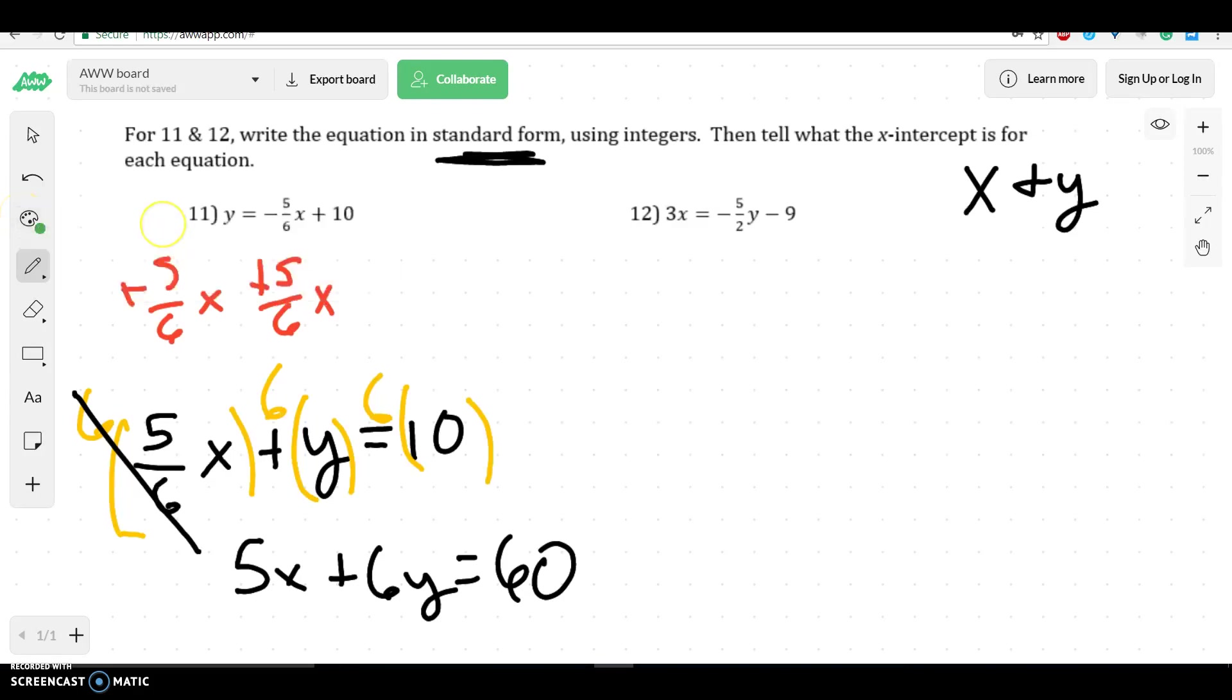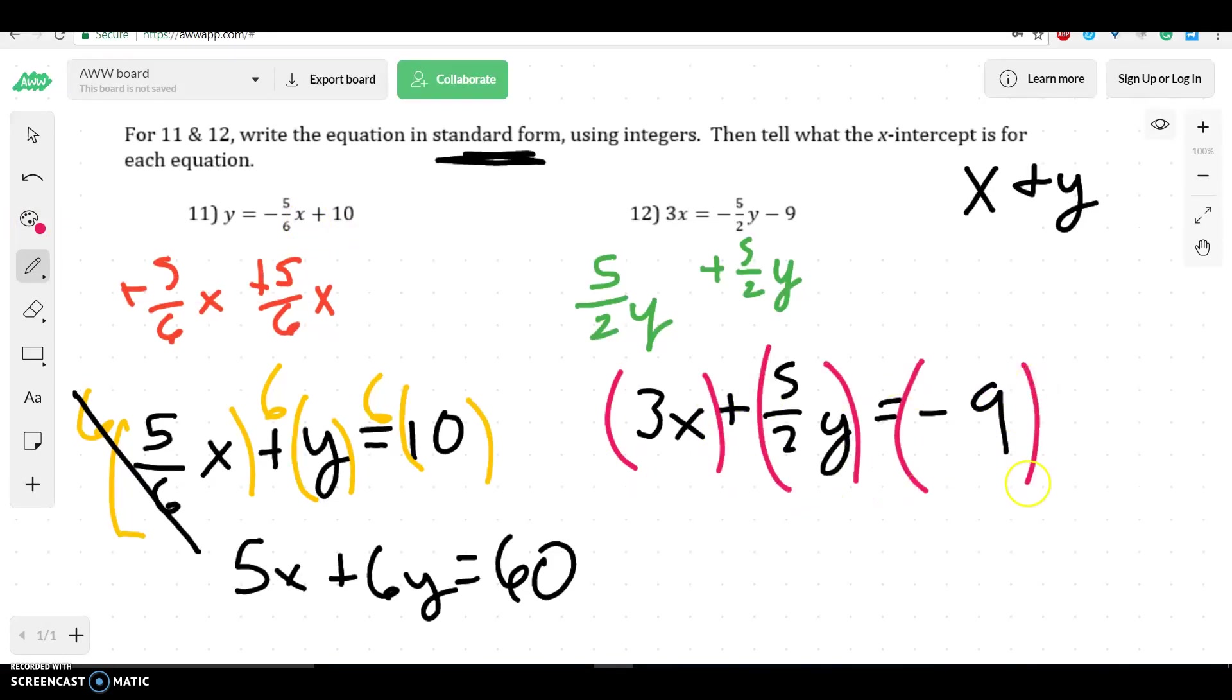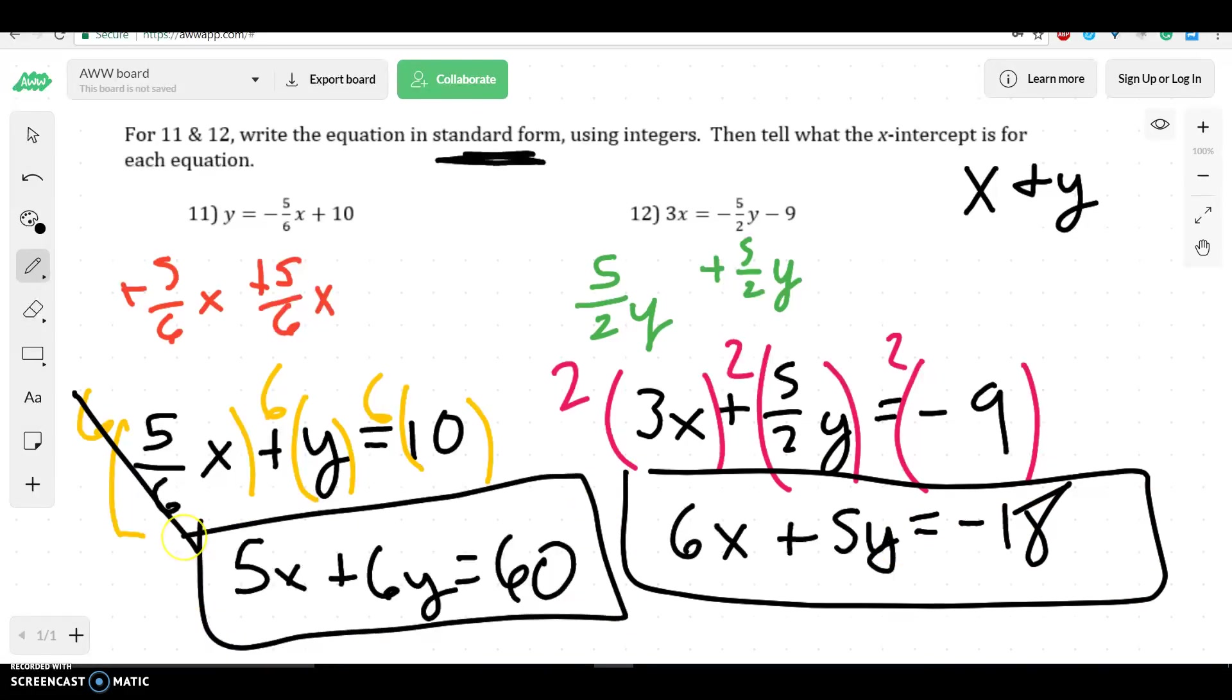Try this other one. Again, you want to have the x and y on the same side. So I'd add over 5/2y. And then I would get 3x plus 5/2y is equal to negative 9. At this stage, again, what I'd want to do is I'd want to multiply everything by that number right there. And those would be my two answers in standard form.